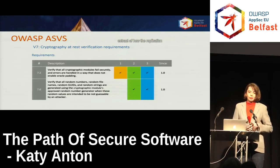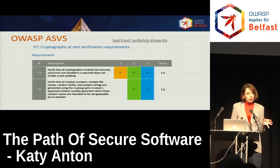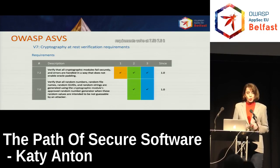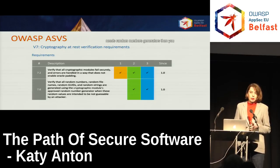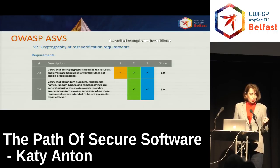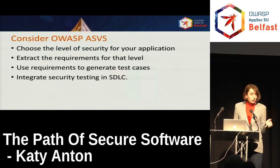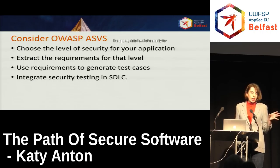Here is an extract of how the verification requirements look in ASVS, where each requirement is clearly marked if it applies to level one, level two, or level three. I particularly chose the cryptography requirements, where at 7.6 it states that when your software needs random number generators, you should use cryptographically approved random number generators. So if these verification requirements had been used in the slot machine software, that vulnerability could have been avoided.